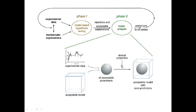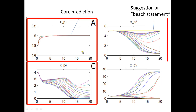Those shared properties are the core predictions. If the different red lines are simulations and predictions for different parameters, then a prediction shared by all of them would be a core prediction. But a prediction that varies widely across simulations would just be a suggestion, because it's not representative of what has to be fulfilled for the model to describe the data. Whereas the core prediction has to be fulfilled if the model should describe the data.